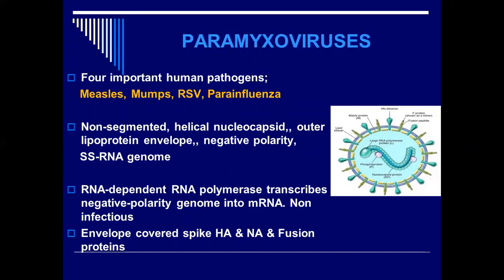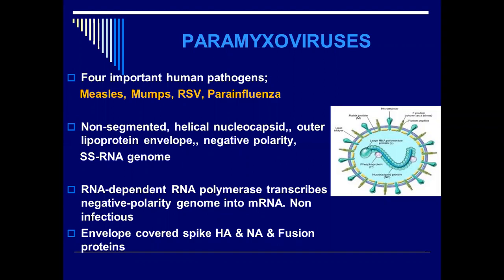All viruses which have the negative-polarity RNA genome always carry an RNA-dependent RNA polymerase. This RNA-dependent RNA polymerase transcribes the negative-polarity genome into mRNA. All negative-strand RNA viruses must carry their own RNA-dependent RNA polymerase so that it can convert the negative-polarity RNA into positive-polarity RNA, and then transcribe it into mRNA.